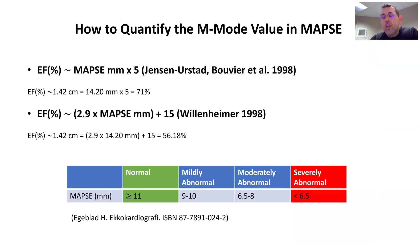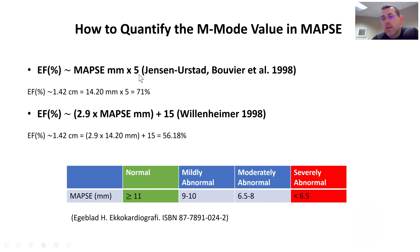We can use this information to quantify ejection fraction. Here I show three different methods. The first one, by Jensen, is simply MAPSE in millimeters times five. So I take 1.42 cm, convert to millimeters — 14.2 mm — times 5, giving 71% ejection fraction.